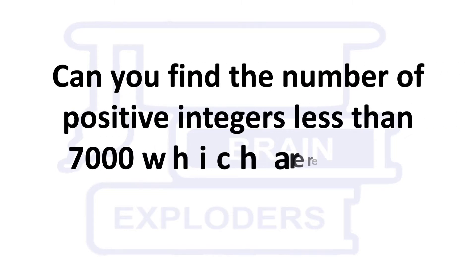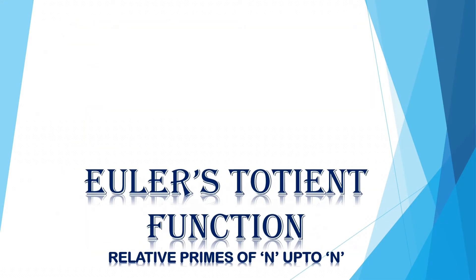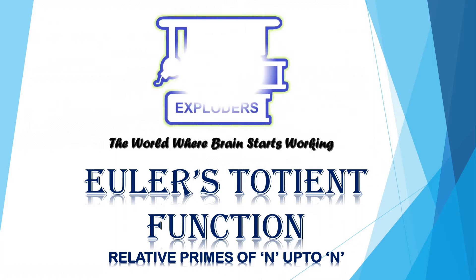Can you find the number of positive integers less than 7000 which are relatively prime to 7000? You are watching Brain Exploders, the world where brain starts working.